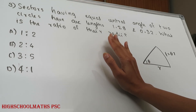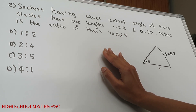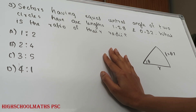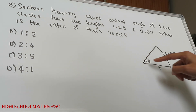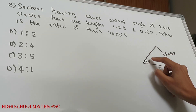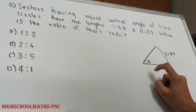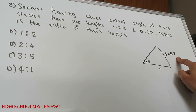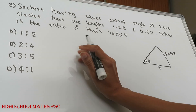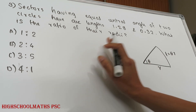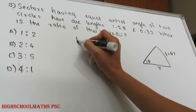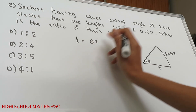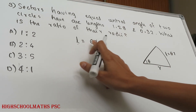Third question: sectors having equal central angles of two circles have arc lengths 1.28 and 0.32. What is the ratio of their radii? We have two circles, each with a central angle theta. The arc length formula is arc length equals theta times r — that is the central angle times the radius.